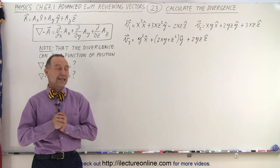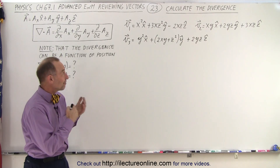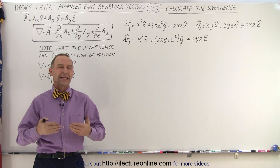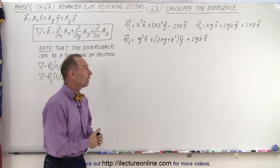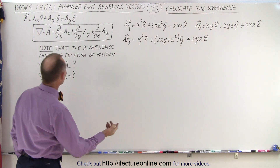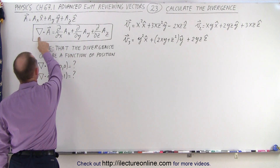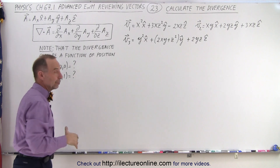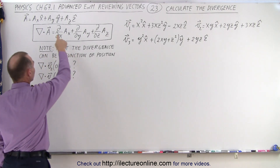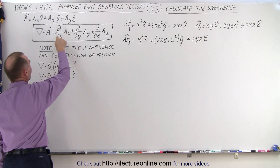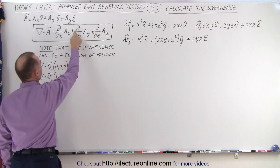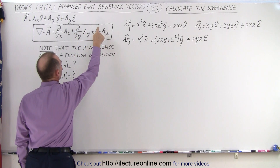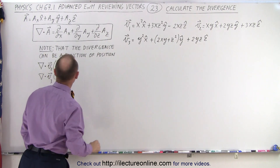Welcome to my lecture online. Here we have three vector functions, v1, v2, and v3, and we're going to calculate the divergence for each of them. That is the result of taking the del operator and multiplying times each of the vectors using the dot product. We take the partial derivative with respect to x of the x component, plus the partial derivative with respect to y of the y component, plus the partial derivative with respect to z of the z component.